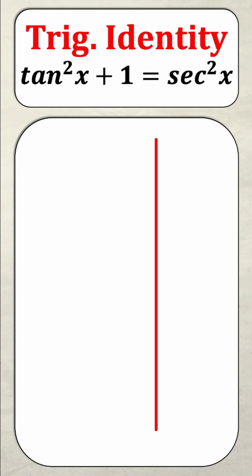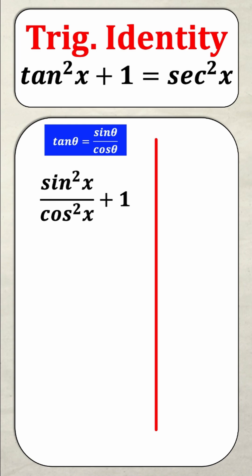On the left hand side we have tan. And remember the quotient identity tan theta is equal to sine theta over cos theta. Well this means that I can write tan squared x as sine squared x over cos squared x.